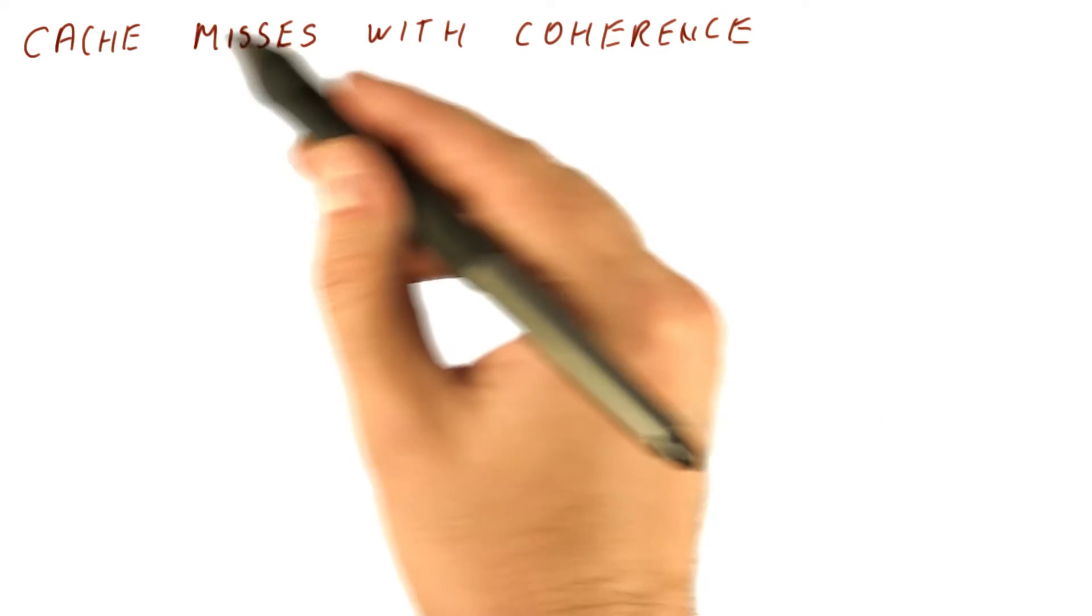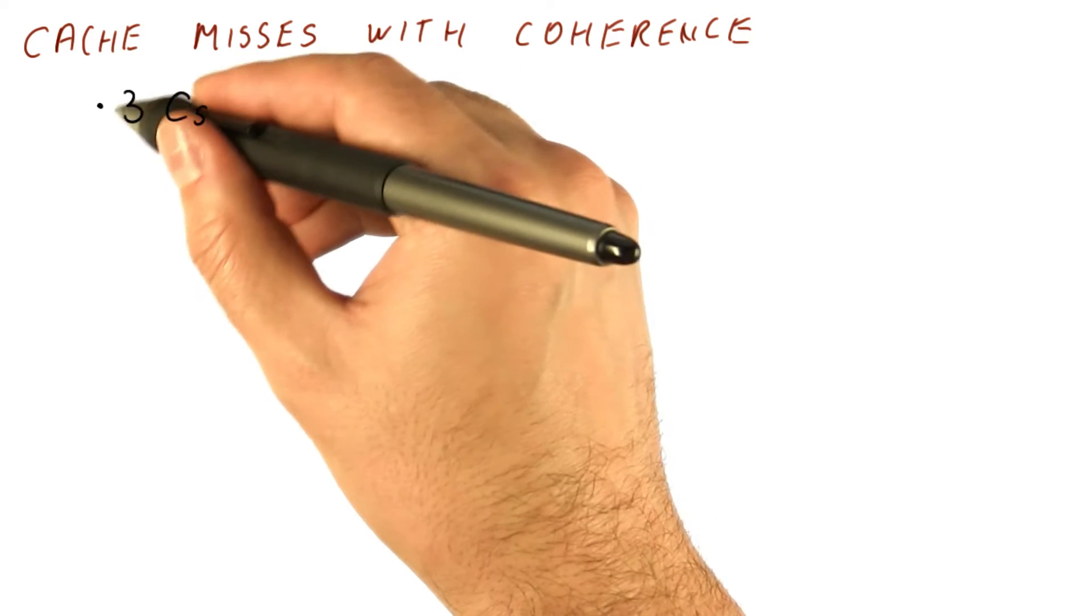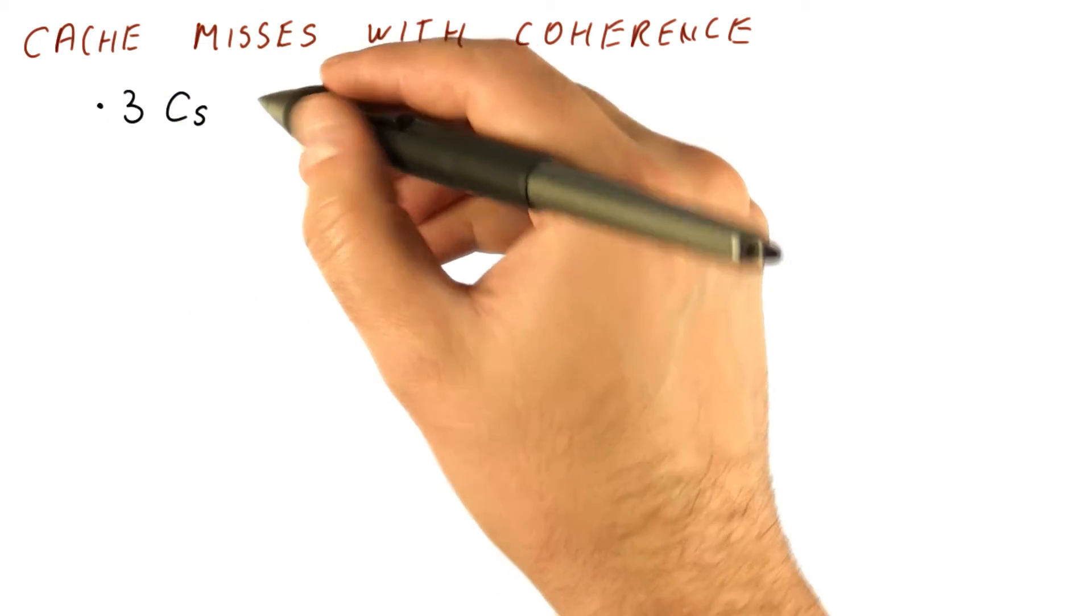So let's now revisit the topic of cache misses when we have coherence going on. We have seen that caches have three C's, three types of misses.